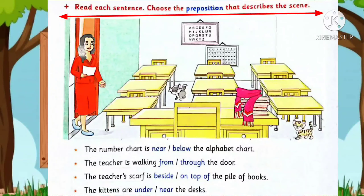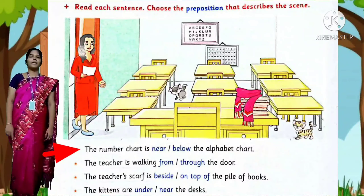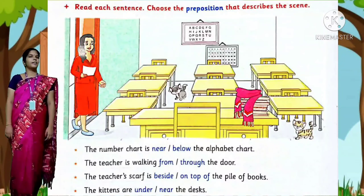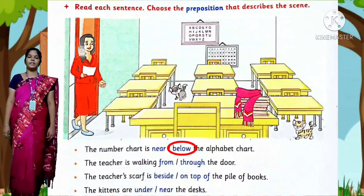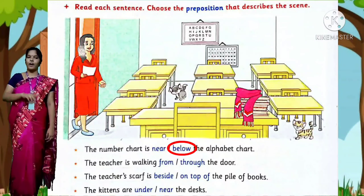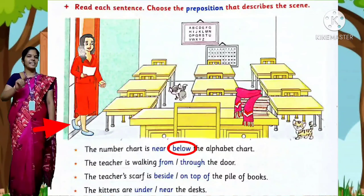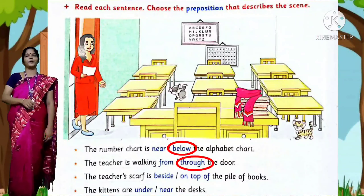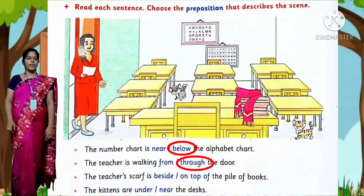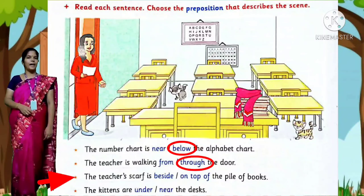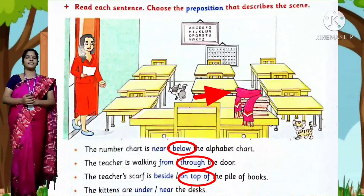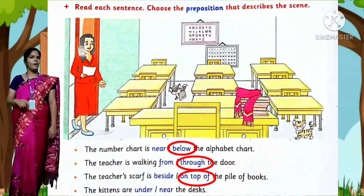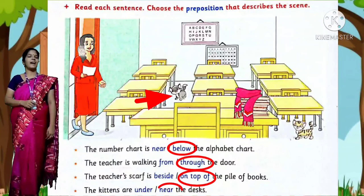My father watches TV until dinner time. A new child sat beside me on the bench. Read each sentence and choose the preposition that describes the scene. The number chart is below the alphabet chart. The teacher is walking through the door. The teacher's scarf is on top of the pile of books. The kittens are near the desk.